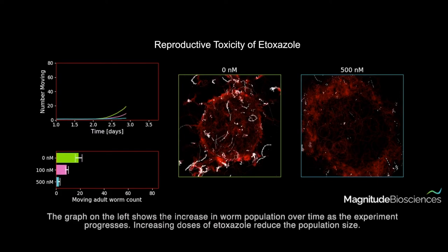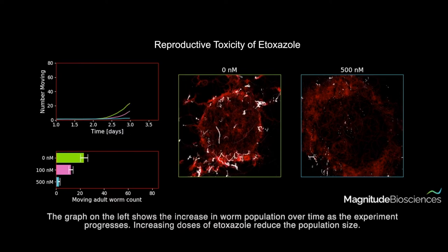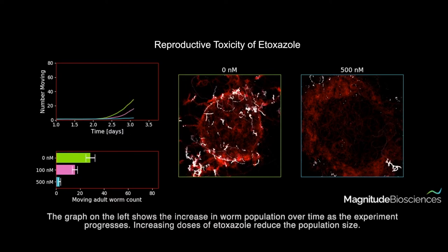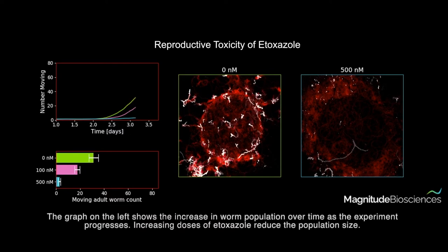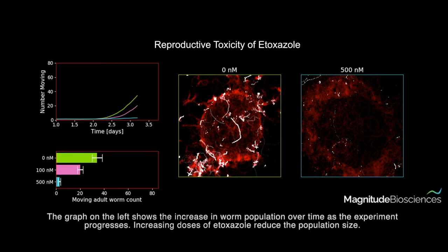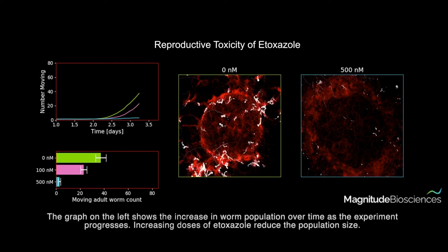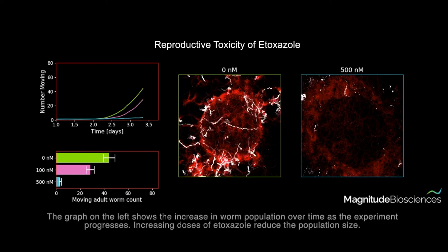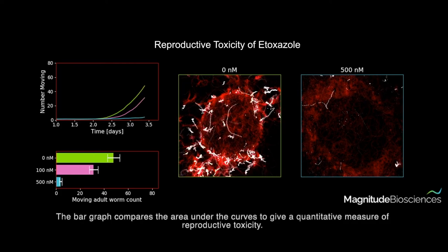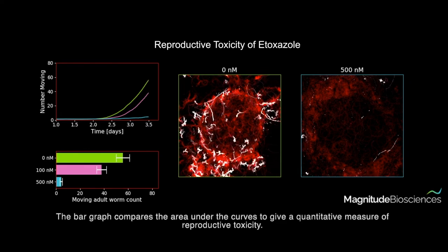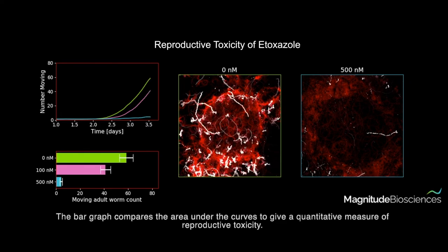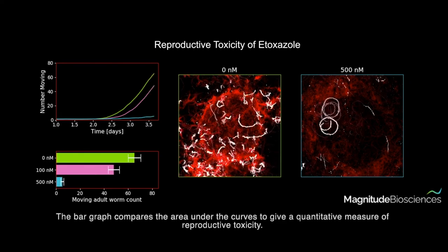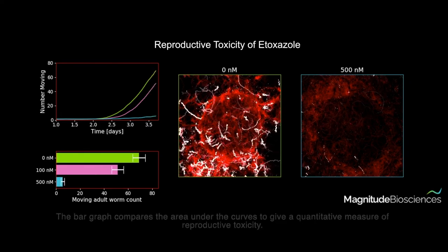The graph on the left shows the increase in worm population over time as the experiment progresses. Increasing doses of etoxazole reduce the population size. The bar graph compares the area under the curves to give a quantitative measure of reproductive toxicity.